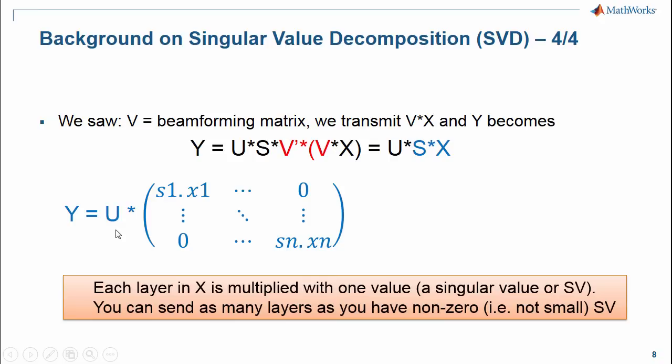Actually, we only transmit as many layers as there are singular values with decent energy, so we only use the first N columns of the V matrix.